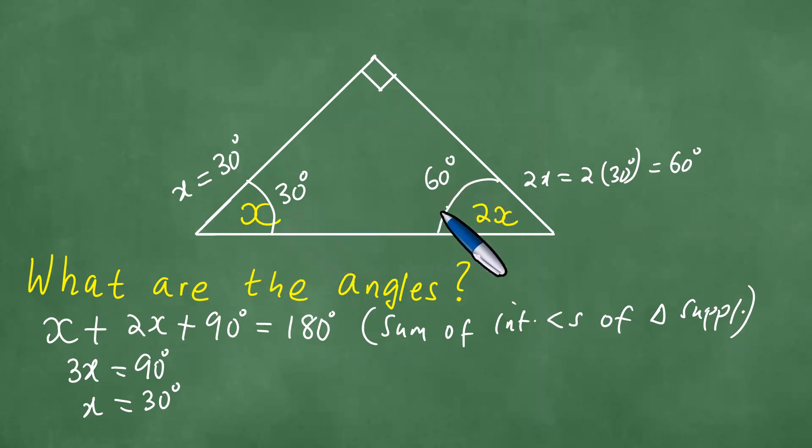30 plus 60 is 90, 90 plus 90 is exactly 180 degrees and we have this here. And with these then we are done.